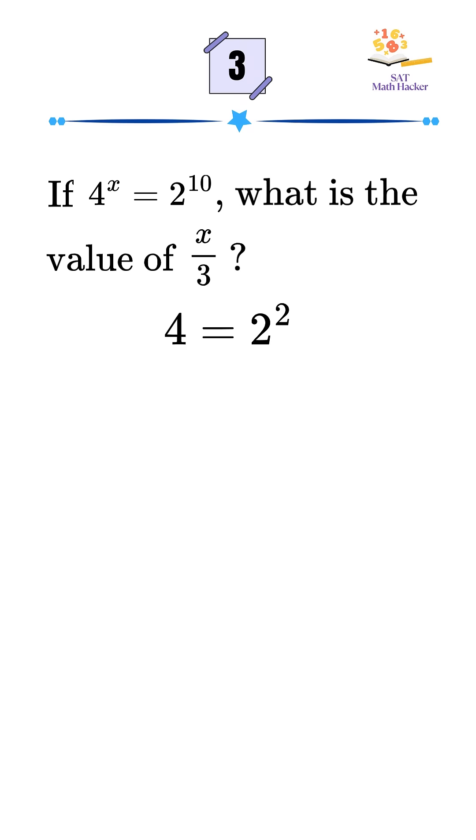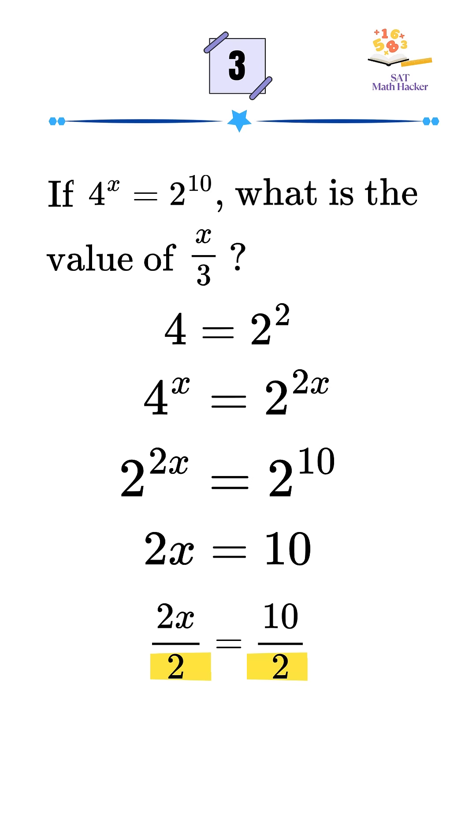First, rewrite 4 as 2 squared. So 4 to the x becomes 2 to the power 2x. Now, both sides are powers of 2, so we equate the exponents. 2x equals 10. Divide both sides by 2. x equals 5.